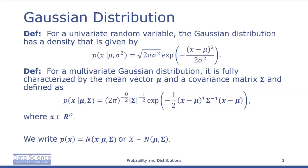The multivariate Gaussian distribution is also fully characterized by the mean vector mu and the covariance matrix sigma, and is defined by the probability of x given mu and sigma equals 2 pi to the negative d over 2, the norm of sigma to the negative 1 half, e to the negative 1 half, x minus mu transpose sigma inverse x minus mu, where x is a d-dimensional real vector.